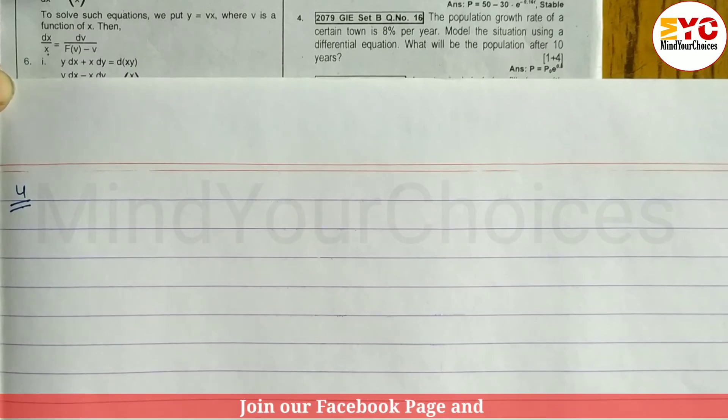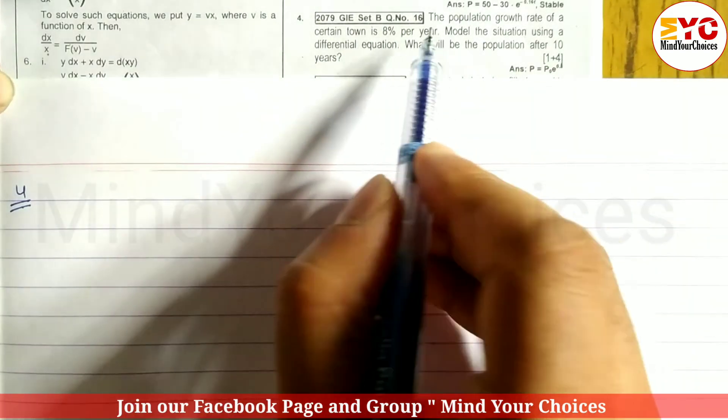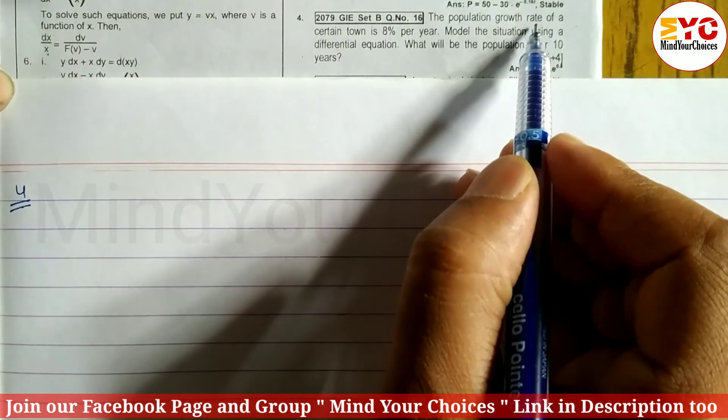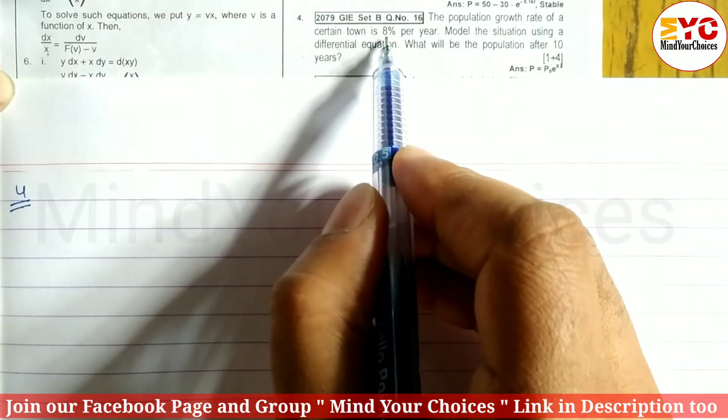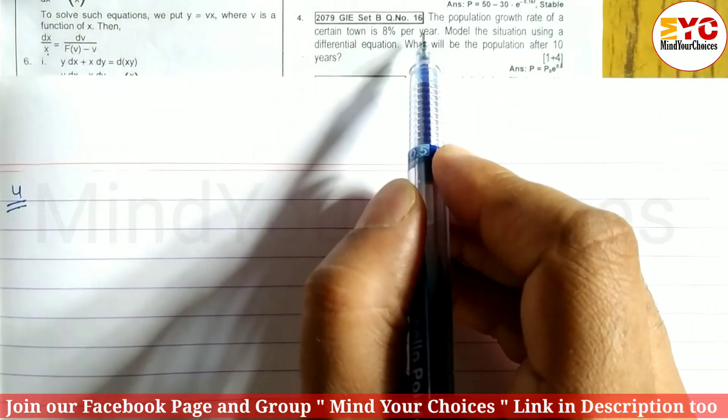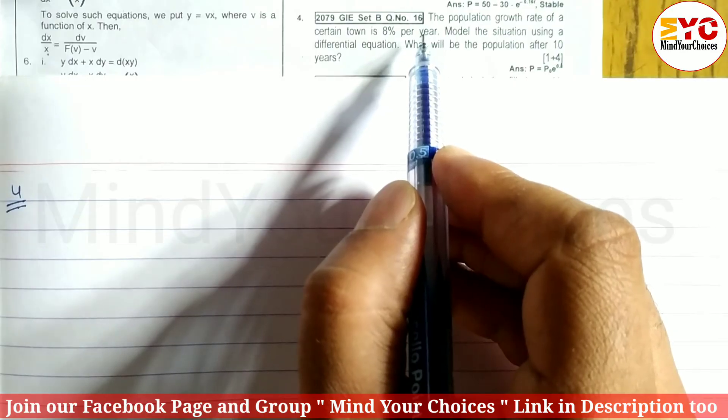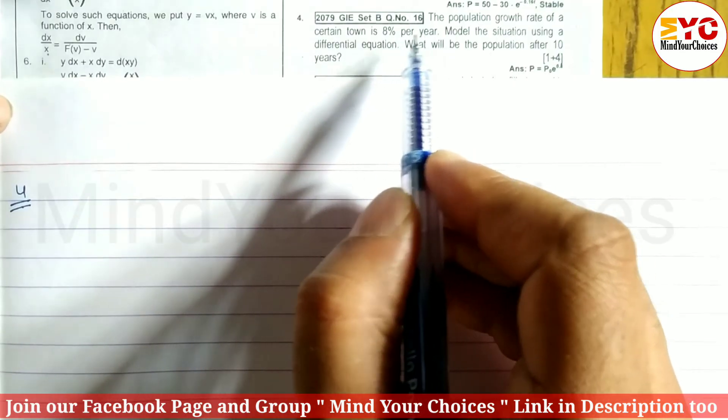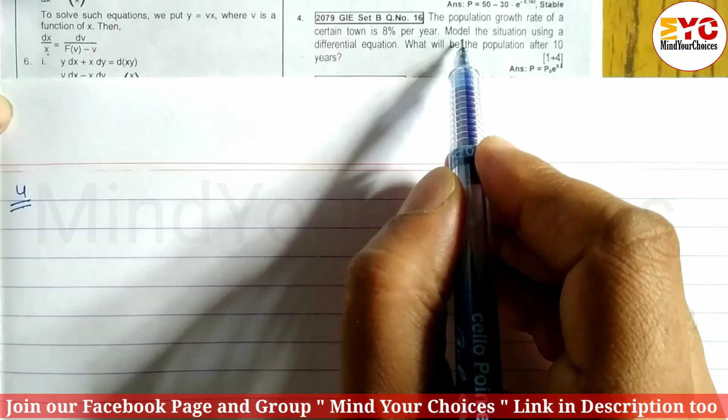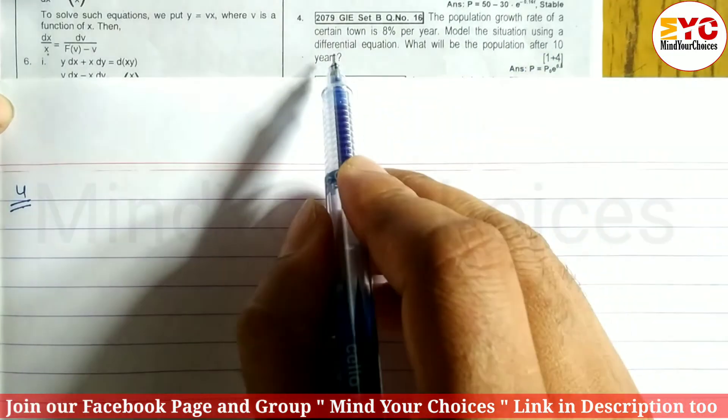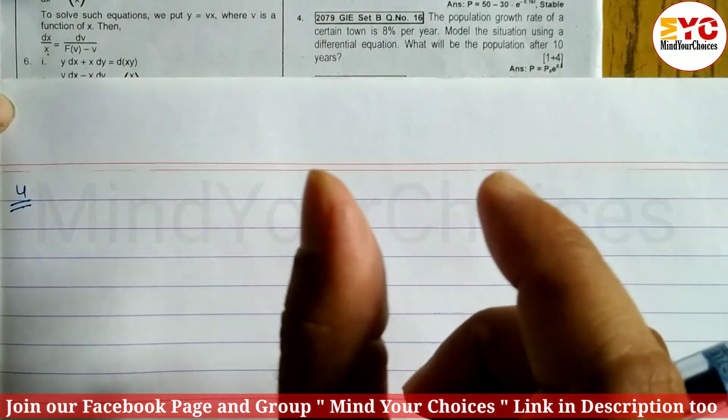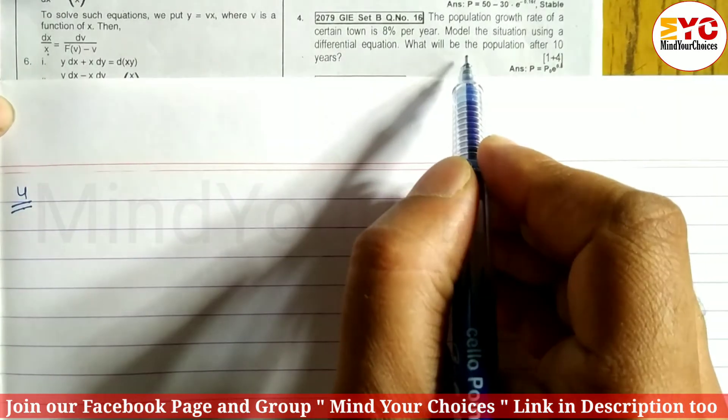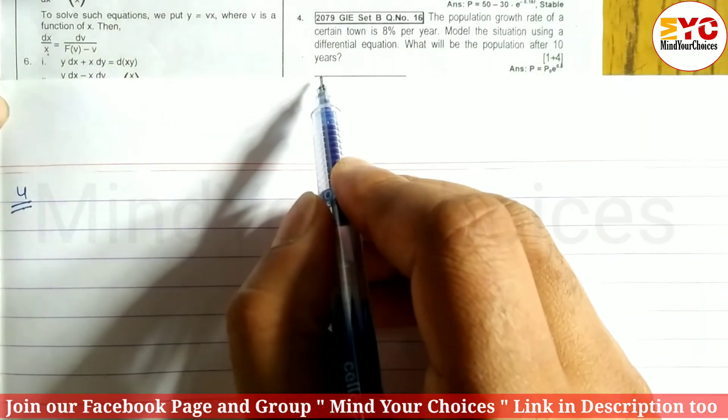Now look at question number 4. The population growth rate of a certain town is 8% per year.